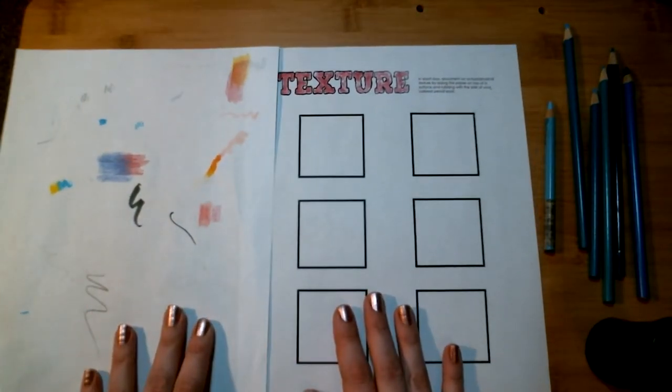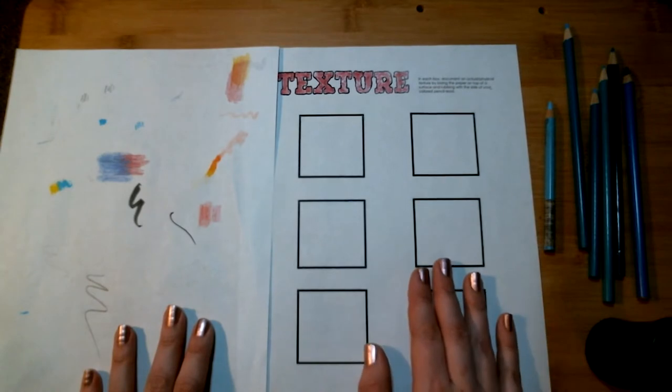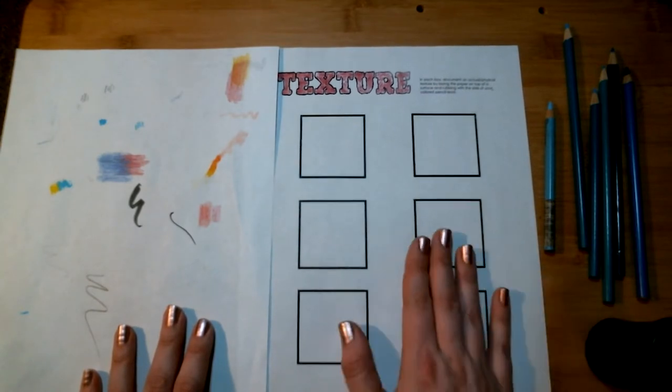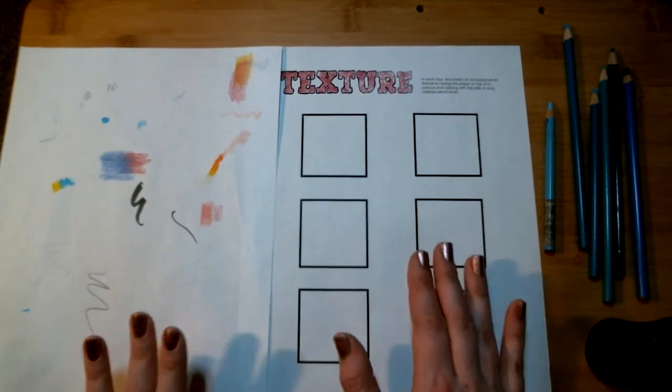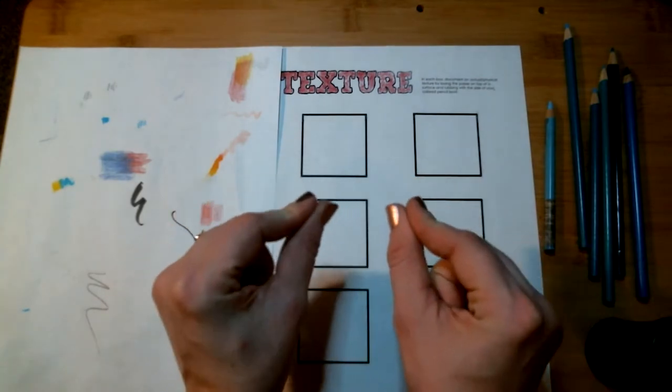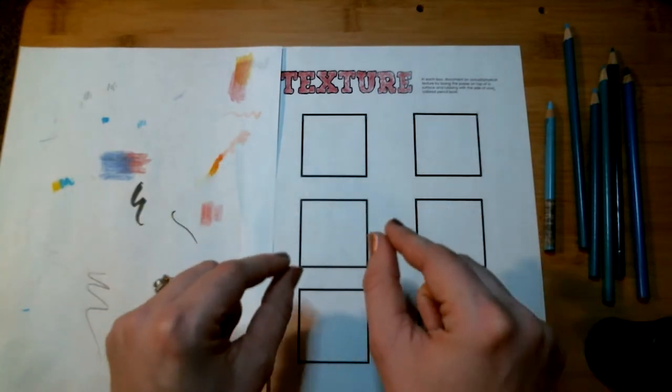Today's worksheet is going to focus on the element of art of texture. This is the last of our elements of art, the last of the very building blocks of visual language.